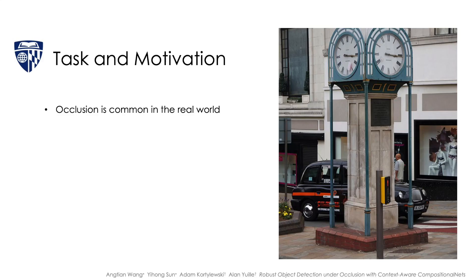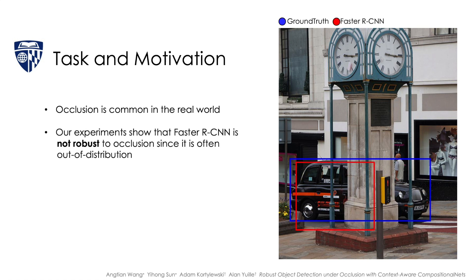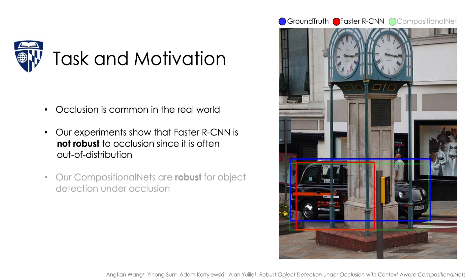Occlusions are common in the real world. As seen from our experiments, Faster R-CNN is not robust to occlusions that are often out of distribution. In contrast, our compositional nets have shown robustness in detecting partially occluded objects by explicitly representing objects as a composition of parts.